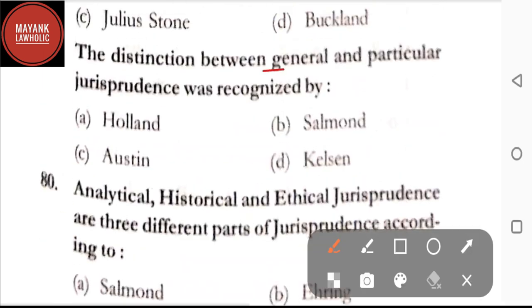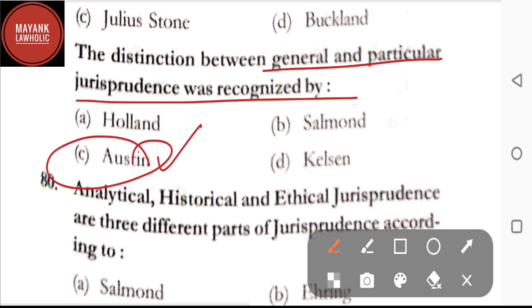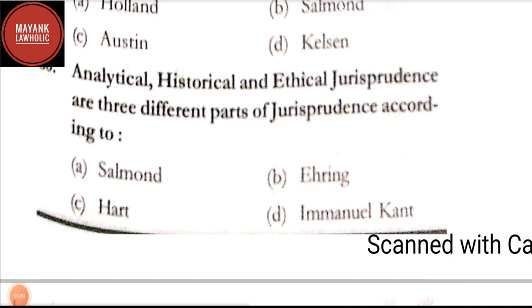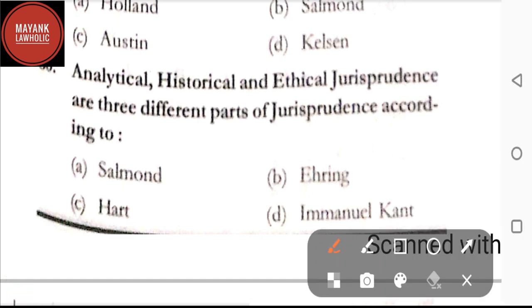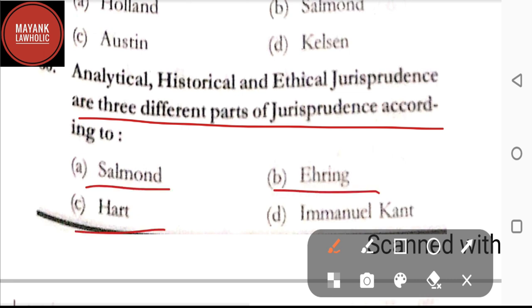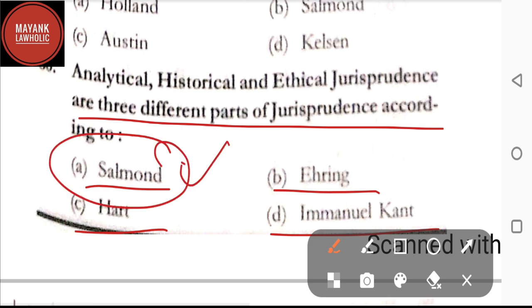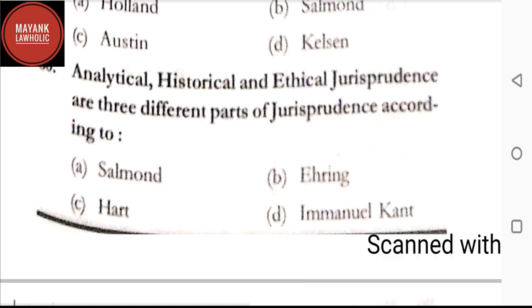Question number 79: the distinction between general and particular jurisprudence was recognized by — option A: Holland; option B: Salmond; option C: Austin; option D: Kelsen. The correct answer is option C, Austin. Question number 80: analytical, historical, and ethical jurisprudence are three different parts of jurisprudence according to — option A: Salmond; option B: Ihering; option C: Hart; option D: Emmanuel Kant. The correct answer is option A, Salmond.